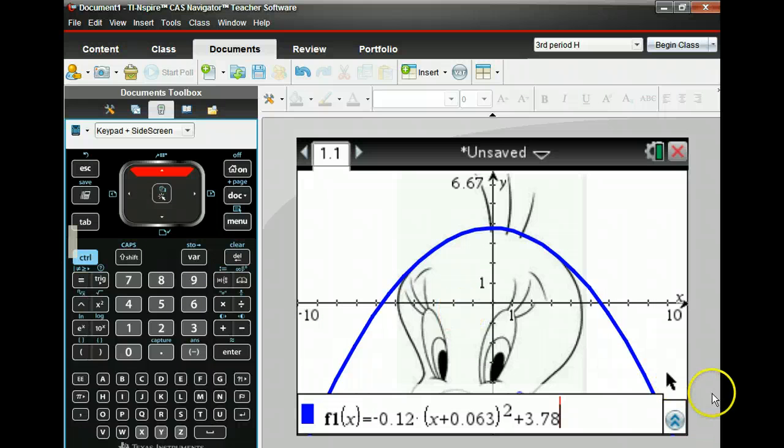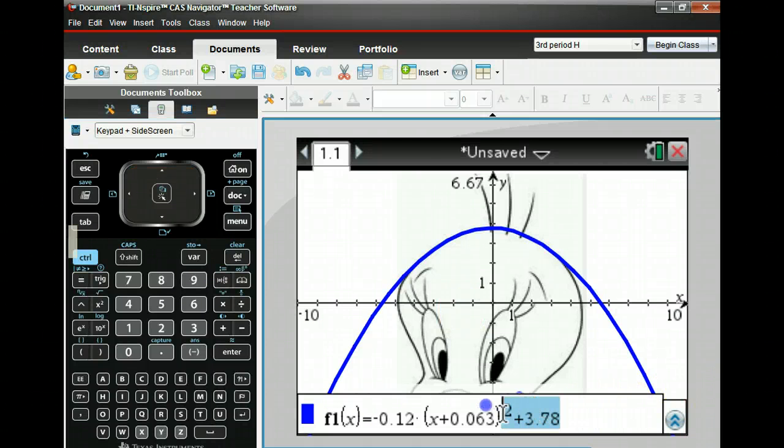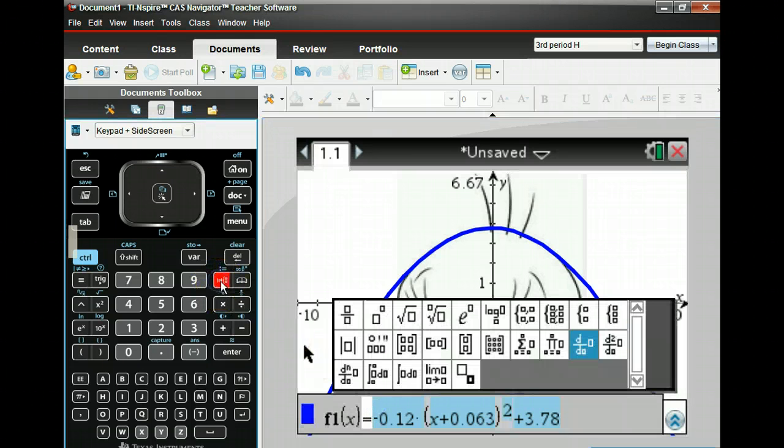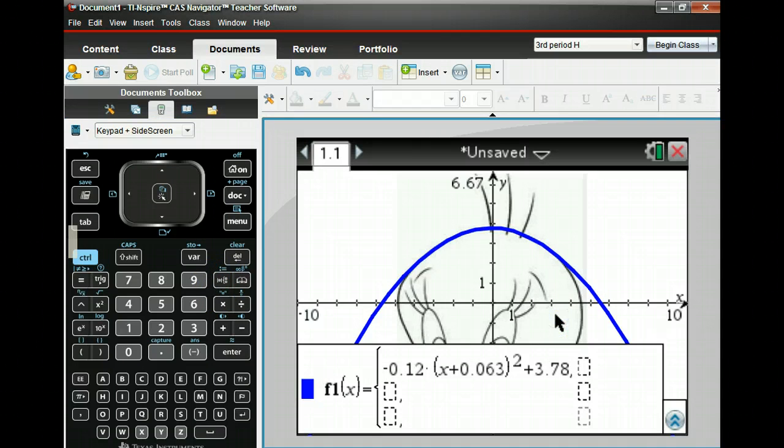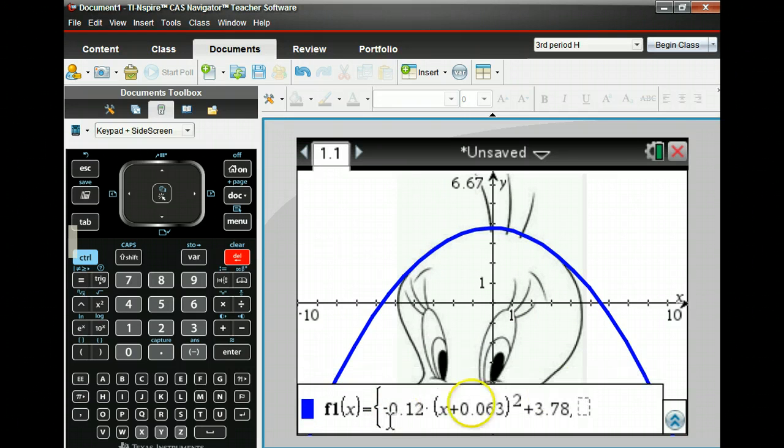Maybe highlight before the equal sign, go to the template key, hit this one. I didn't mean to hit three pieces. One piece, there you go. So then restrict it from, say this is one, two, three, four, the x values here are about 4.7.